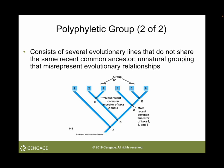Lastly, we have the polyphyletic group. In this example, we only include taxa 3 and 5. These do not share the same recent common ancestor — they are only those two descendants with no recent shared common ancestor, which is what makes this a polyphyletic group.